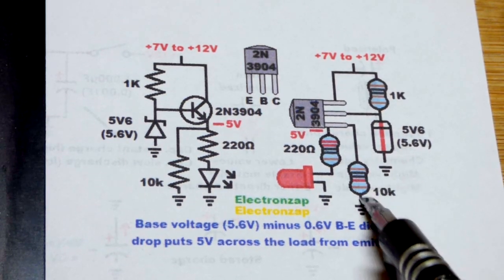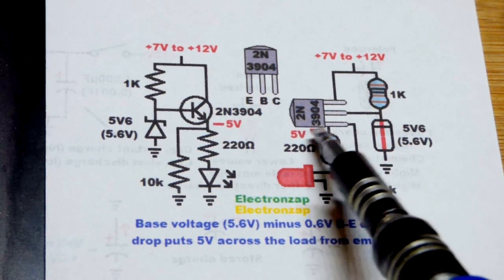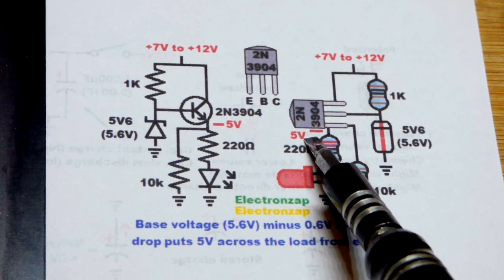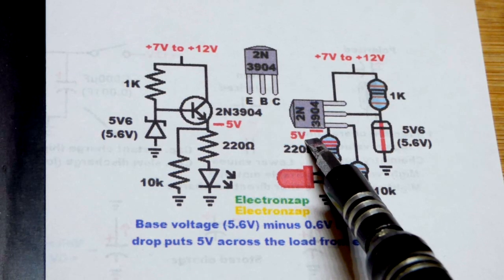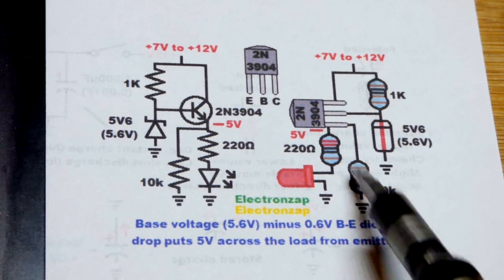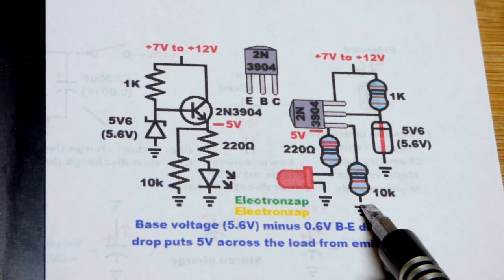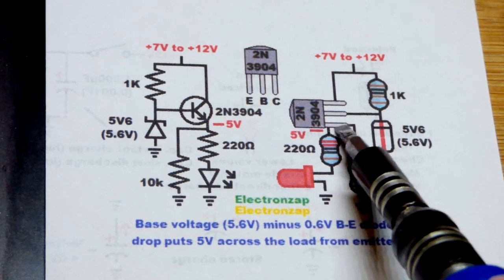Now we have this other resistor here. And this 10 kilo ohm resistor, some loads will throw off that voltage for one reason or other. They tend to be semiconductor loads. And so if you just put resistance to a ground, you don't really need hardly any current flowing through. 10 kilo ohms works pretty well. But it helps stabilize that voltage, hold it pretty good.